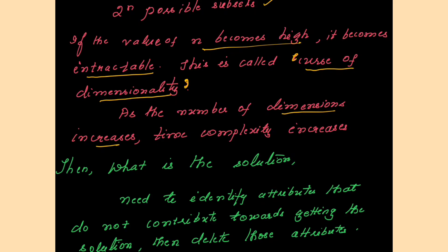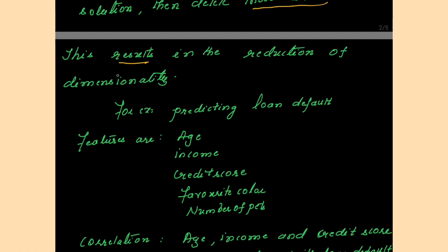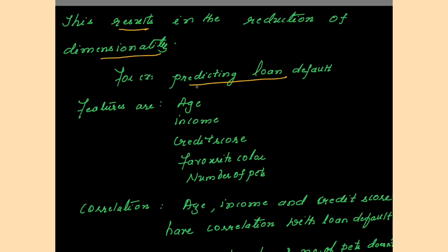To solve this, you need to identify those attributes that are not contributing towards getting the solution, and delete those attributes from the data set. When you delete the attributes, that will result in the reduction of dimensionality. For example, the task is to predict loan defaulters. There are several attributes — I have listed a few: age, income, credit score, favorite color, and number of pets.